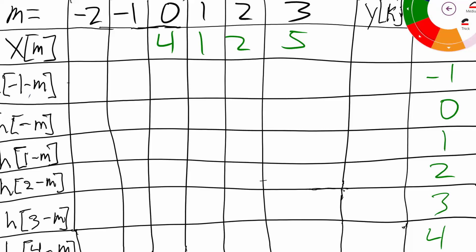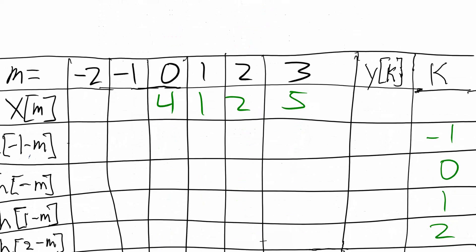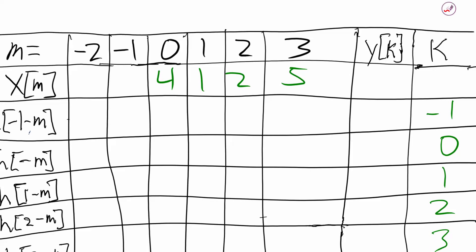Now we have our h of negative 1 minus m. So since it started from negative 1, we're going to be shifting at 1 and inverting it. So what normally is at the beginning of h of k, which was 1, it's going to be negative 1 instead. So we're going to be going negative 1, 2, and then 1. And we're going to be looking for an overlap here. So we have an overlap here of 4 and 1. We're going to multiply those. And since there's no other overlaps, we won't be doing any summing here. It's just going to be 4 times 1, and that will give us the 4 for our output.